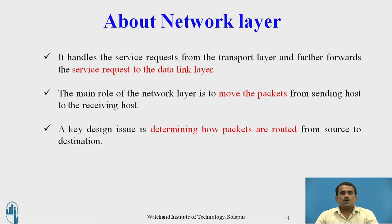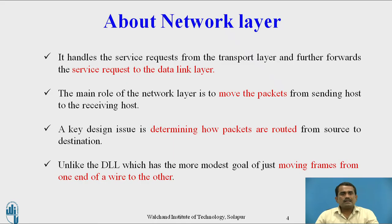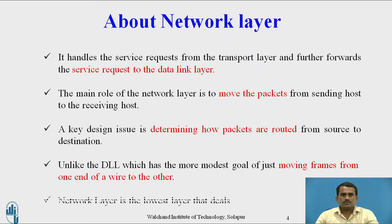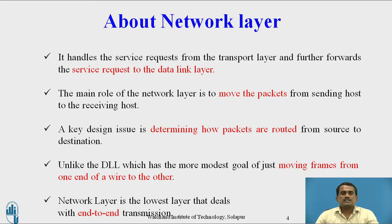The key design issue is determining how packets are routed from source to destination. Unlike the data link layer, which has the modest goal of just moving packets from one end of a wire to the other, the network layer is the lowest layer that deals with end-to-end transmission. In the network layer, the user can send data end to end.